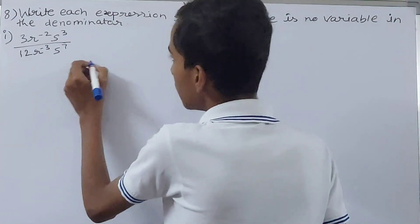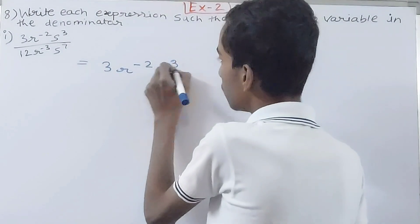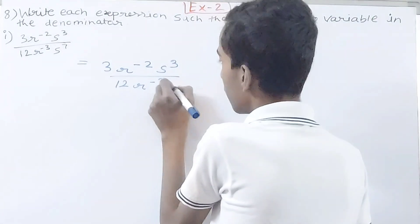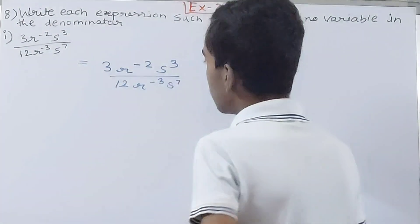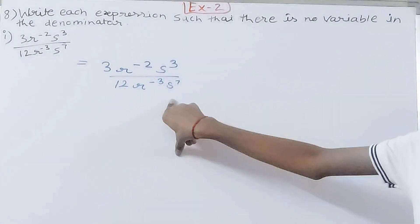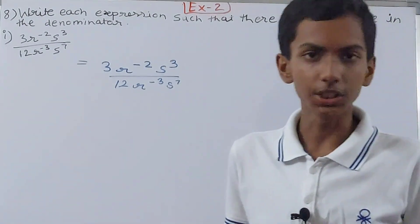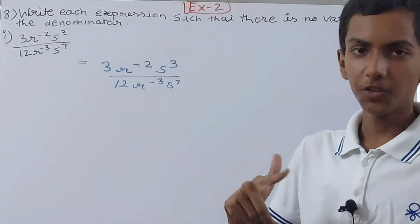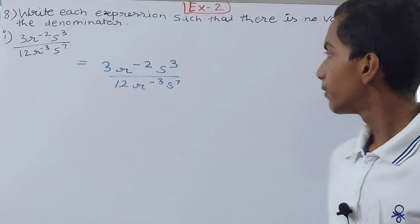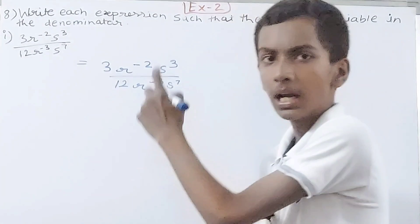The first expression is 3r^(-2)s^3 upon 12r^(-3)s^7. We have to remove r and s from the denominator. We will use the law of exponents for division — when dividing two same variables, we subtract the power of the denominator from the power of the numerator.